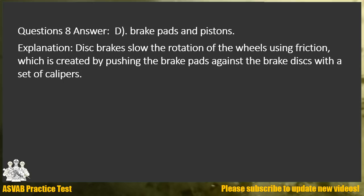Answer D. Brake pads and pistons. Explanation: Disc brakes slow the rotation of the wheels using friction, which is created by pushing the brake pads against the brake discs with a set of calipers.